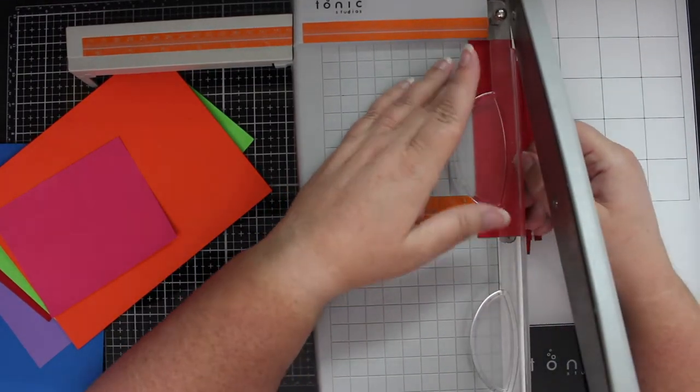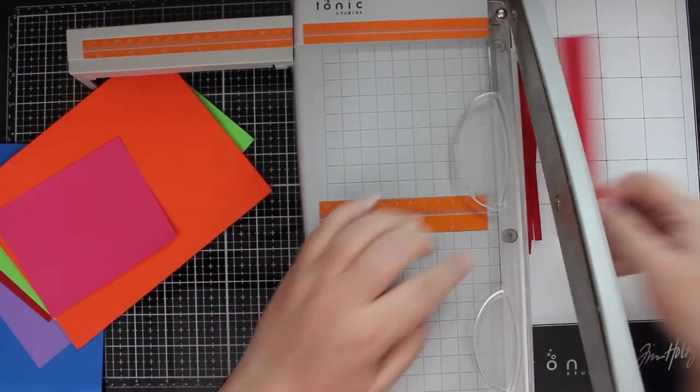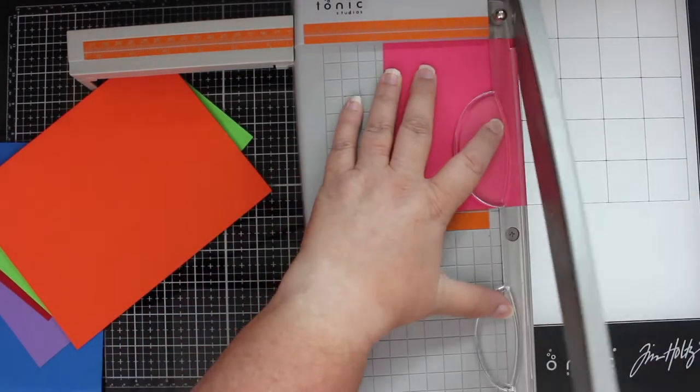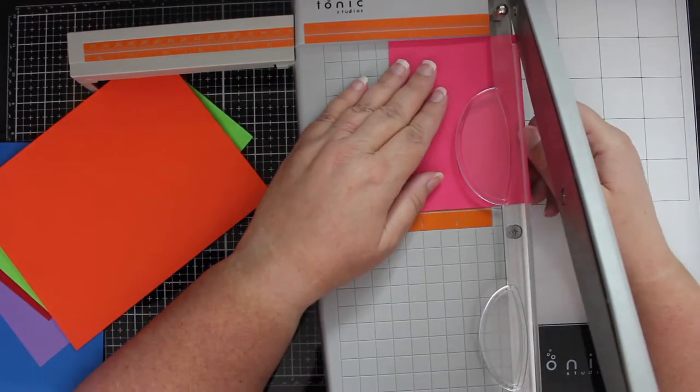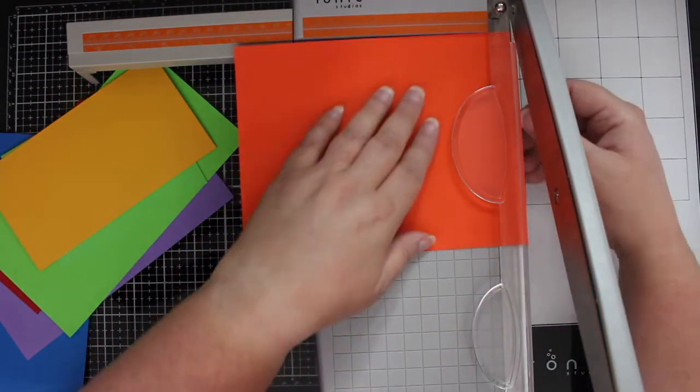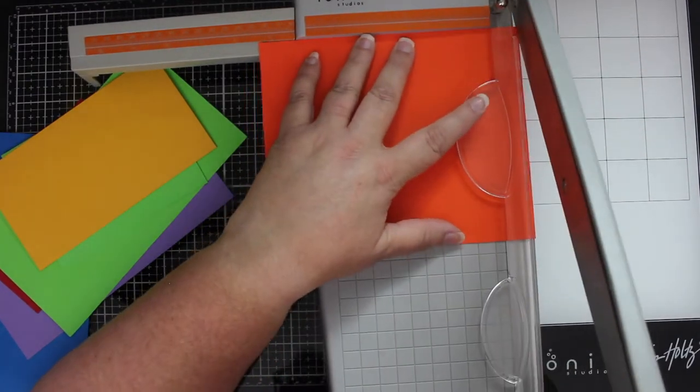I was only able to invest in one guillotine trimmer so I decided to get one that would be the smallest for my desk but where I could still cut 12 by 12 pieces of paper since I'm also a scrapbooker. So this one I can put a 12 inch piece in and then the guide goes all the way to 12 inches so I can take a whole scrapbook piece of paper and do whatever I need to do with it.